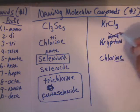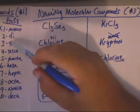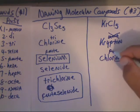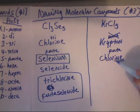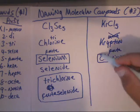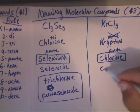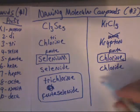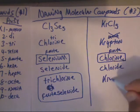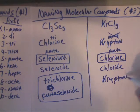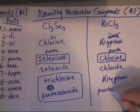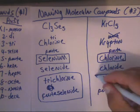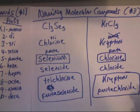You're not allowed to put mono on the first element. You can't write mono on the first one. You can use di, tri, all of these — but you can't use mono. Chlorine: there are five of them, so that's penta. So let's fix the ending — drop off -ine and add -ide, so that's going to be chloride. So this one's name is krypton, K-R-Y-P-T-O-N, penta, chloride, C-H-L-O-R-I-D-E. You've named a molecular compound — one involving a metalloid, the other a noble gas.